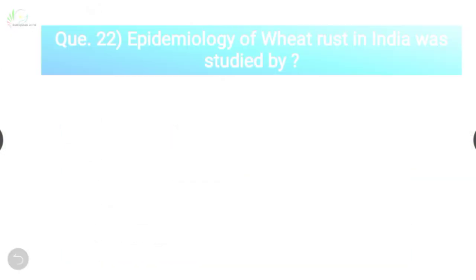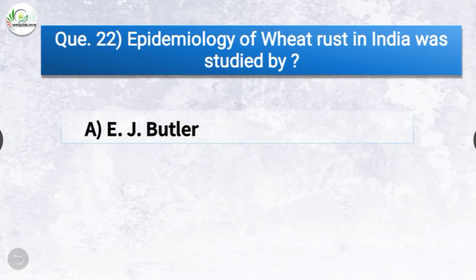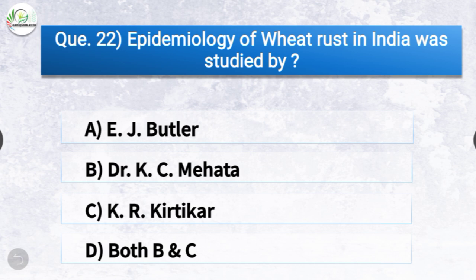Question number twenty-two: Epidemiology of wheat rust in India was studied by dash. The options are EJ Butler, Dr. KS Mehta, KR Kirtikar, or both B and C. The correct answer is option B, Dr. KS Mehta. Epidemiology of wheat rust in India was studied by Dr. KS Mehta.